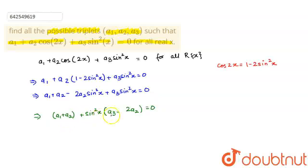One being this, another being this, and the third being this. So a1 + a2 = 0. Second factor: a3 - 2a2 = 0. And the third factor, sin²(x) = 0.